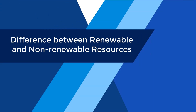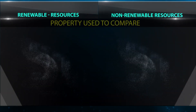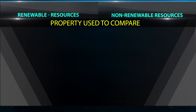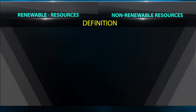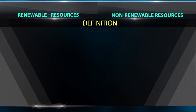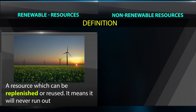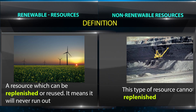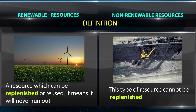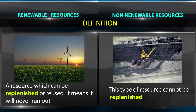Difference between Renewable and Non-Renewable Resources. A renewable resource is one which can be replenished or reused, meaning it will never run out. A non-renewable resource is a type of resource that cannot be replenished.